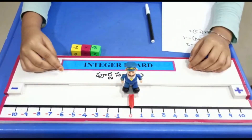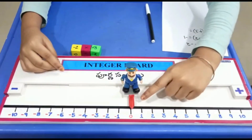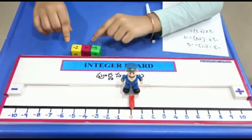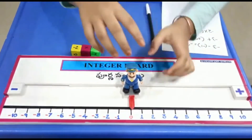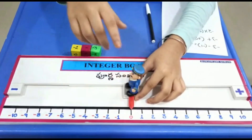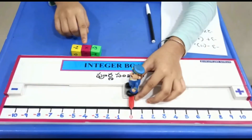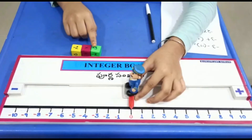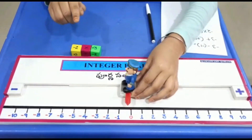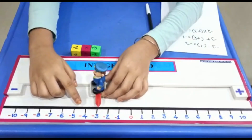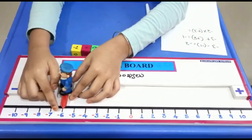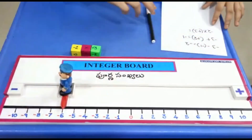Now let us keep the indicator at 0. Minus means we should turn towards the negative side. 2 into plus 3 is 2 times of 3: 1, 2, 3 — 1, 2, 3. Our answer is minus 6.